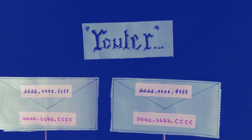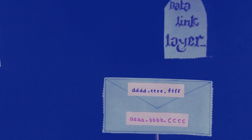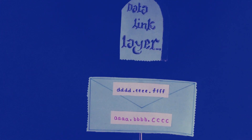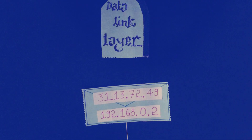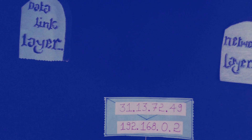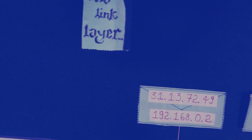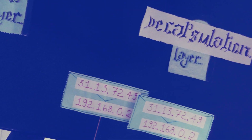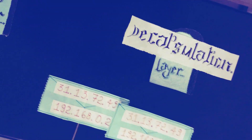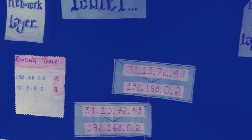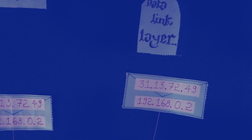Routers find an efficient way to deliver packets with respect to destination address. The frames reach the data link layer, where decapsulation takes place. Based on the destination IP address, the router forwards the packet. The packets then reach the network layer, and the router routes the packets based on the routing table.